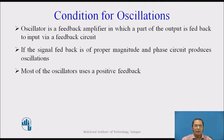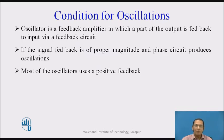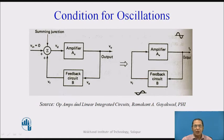Let us move ahead with the concept of oscillators. Basically, an oscillator is an amplifier with feedback, where part of the output of the amplifier is fed back to the input via a feedback circuit. The oscillator has two parts: first, an amplifier with gain A, and second, a feedback circuit with feedback factor B.